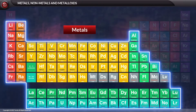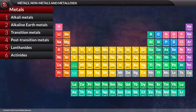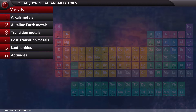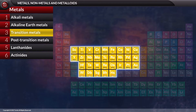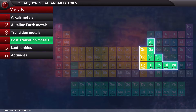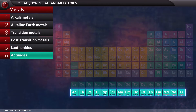Usually, metals are placed on the left side of the periodic table. As we go from left to right, the non-metallic character increases. Metals and non-metals can be further classified. Metals can be classified into alkaline metals, alkaline earth metals, transition metals, post-transition metals, lanthanides, and actinides.